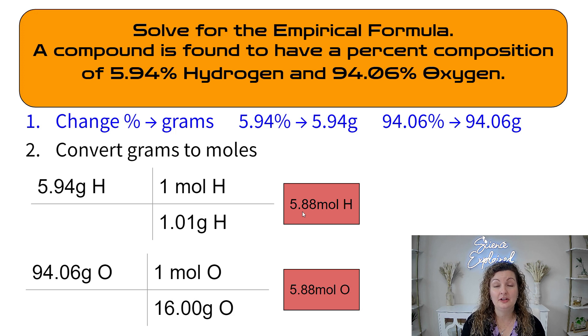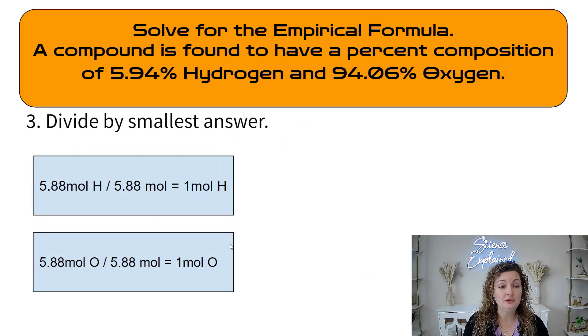Put it in your calculator. You get 5.88 moles of hydrogen. We're going to repeat the same process over here with the 94.06 grams of oxygen. This time, our molar mass on the periodic table is 16. So our math is going to come out to 5.88 moles of oxygen. Now, it's very rare that you get the same answer for both, but you're going to look and you're going to say, which one is the smallest number? And then you're going to divide both of these answers by that smaller number.